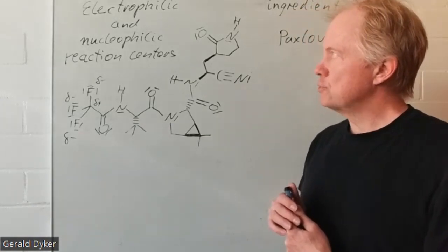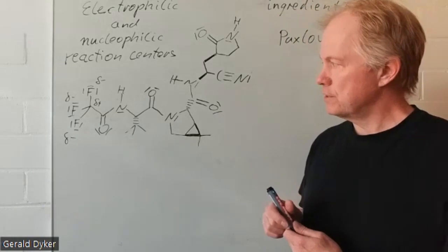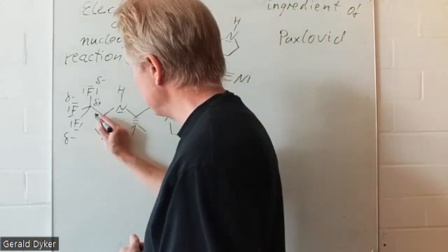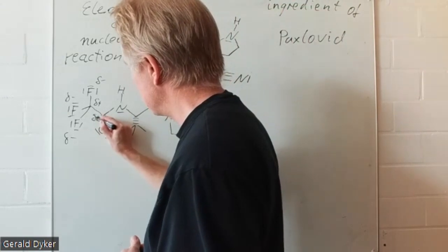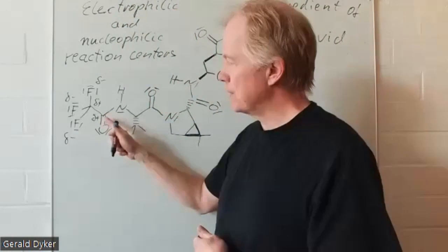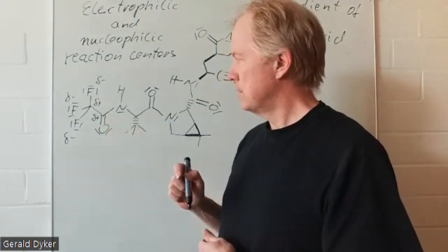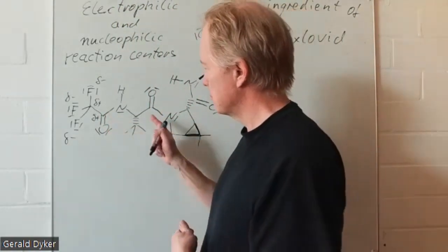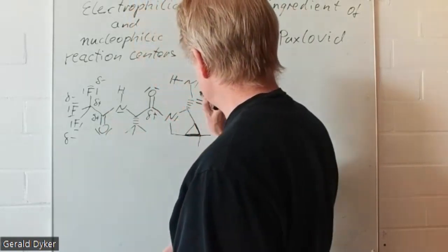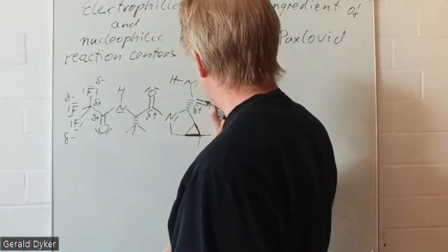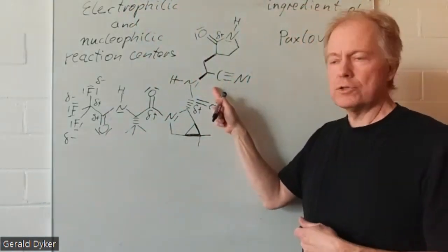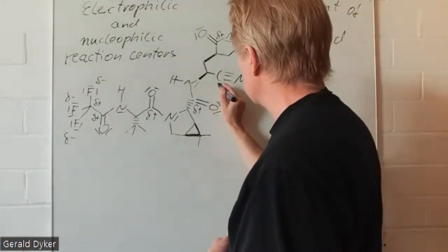So where else do we have electrophilic centers? Well, a delta plus can be attributed to the carbonyl carbons. In this molecule, we have quite a few of those. And of course, also to this nitrile carbons.